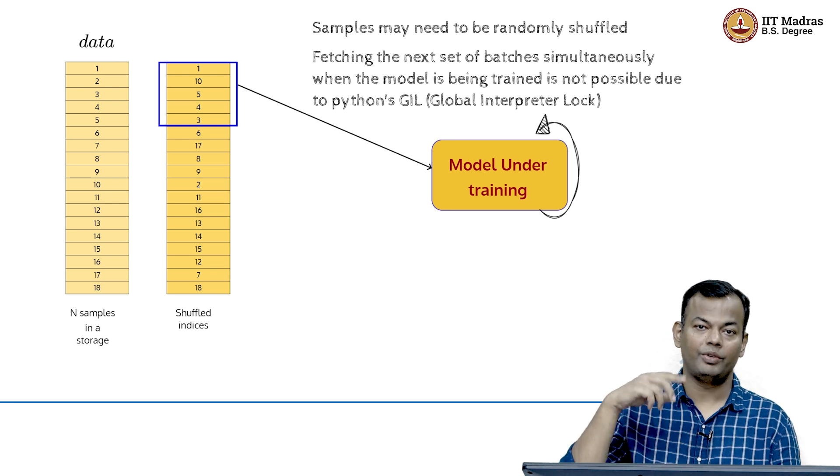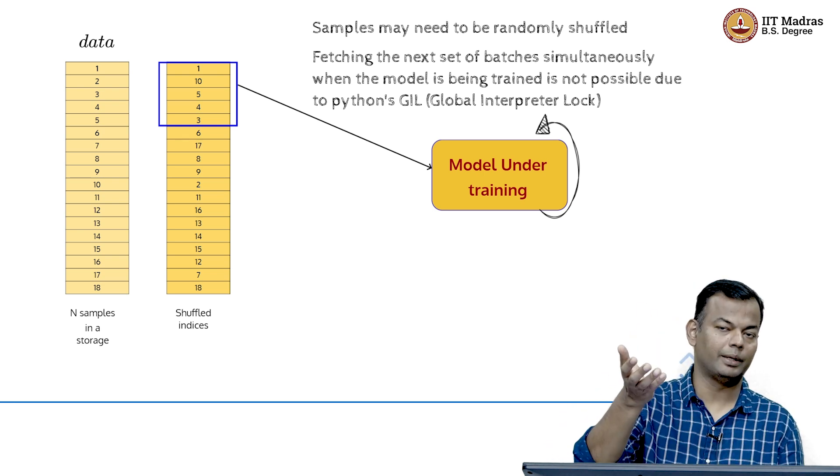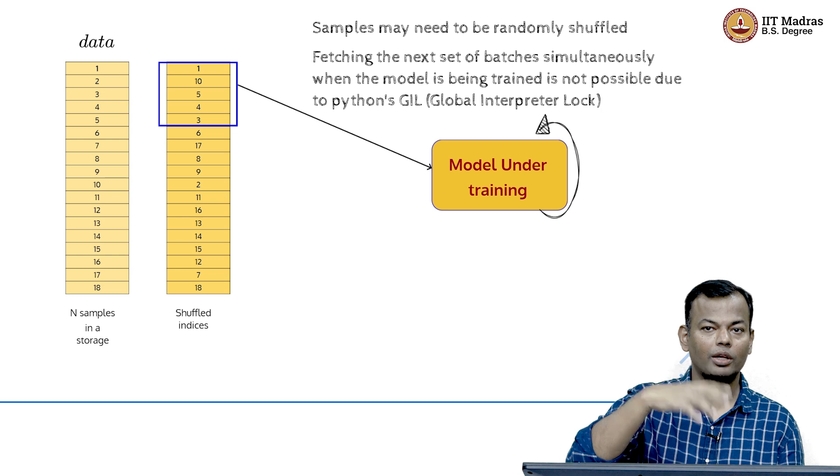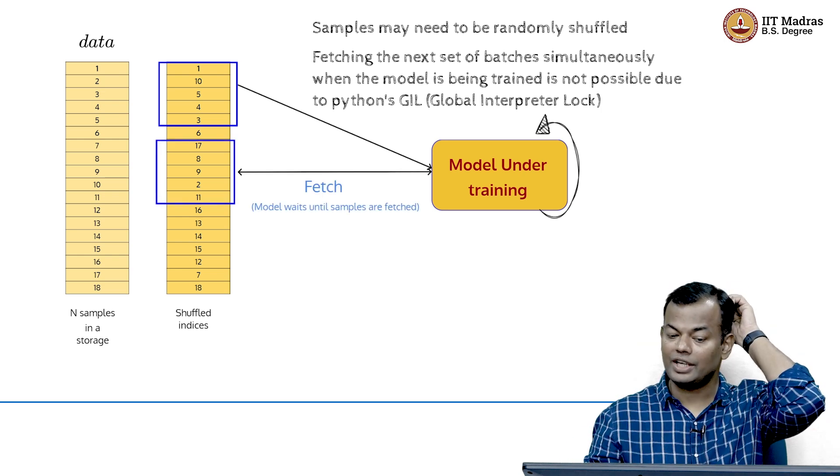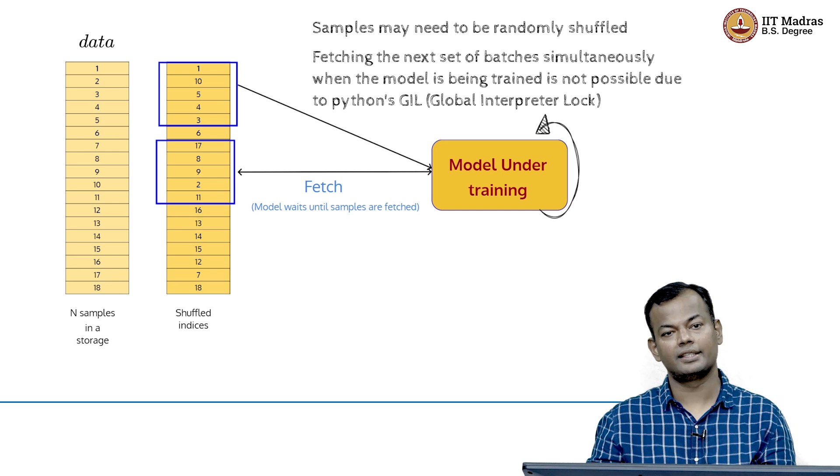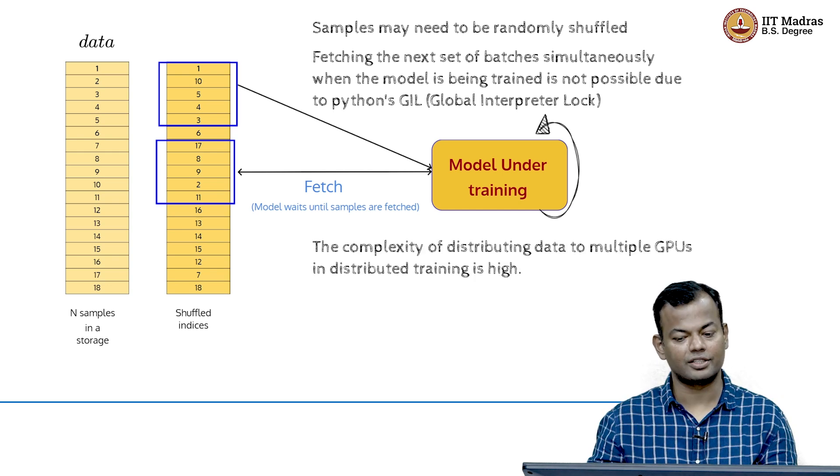Now the model data is being read and the model is under training and there is this global interpreter lock, which does not allow you to fetch the next batch when the model is being trained on the current batch. That could lead to some challenges where the model is waiting for the next set of samples to be fetched.